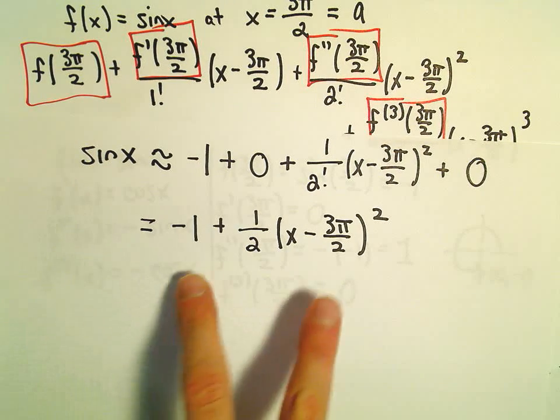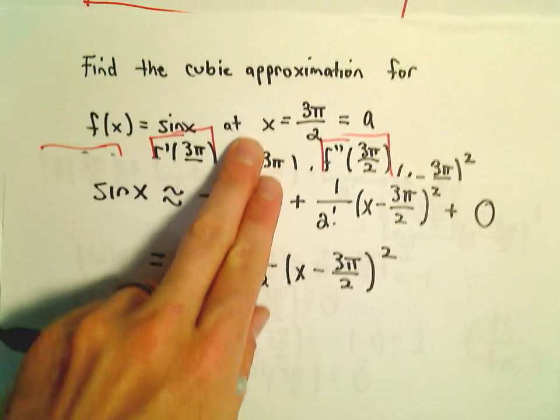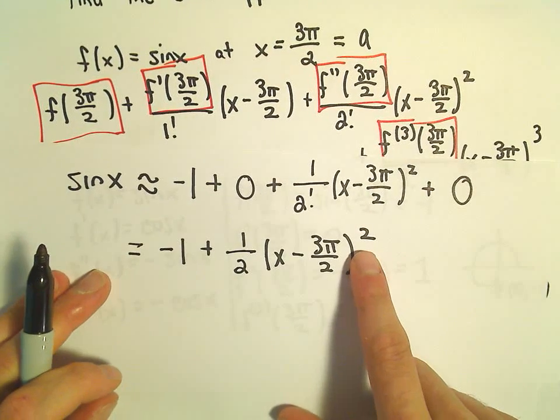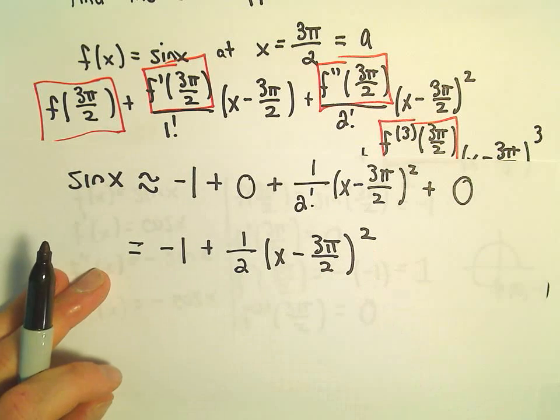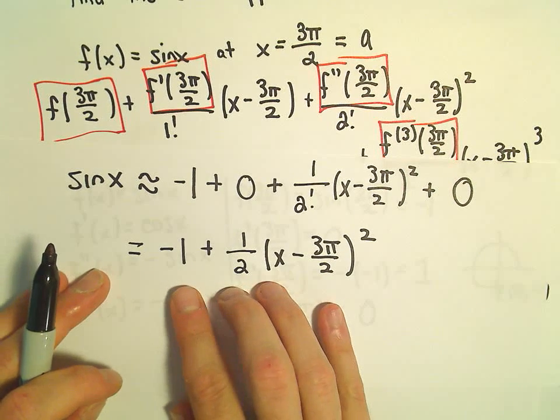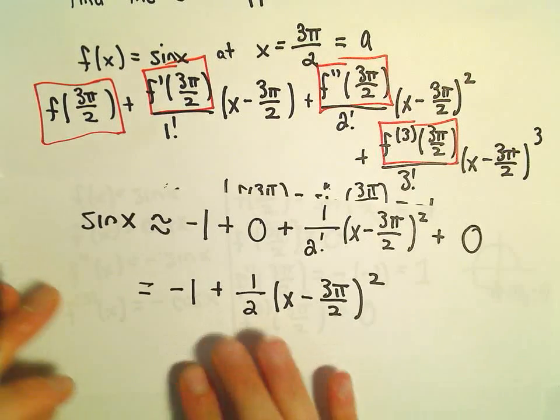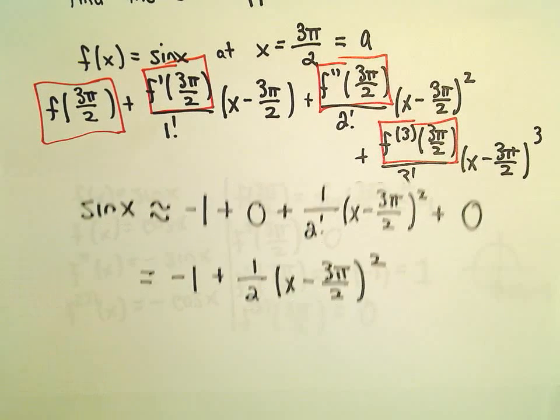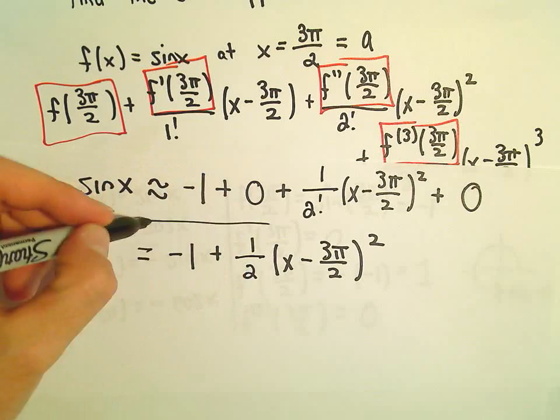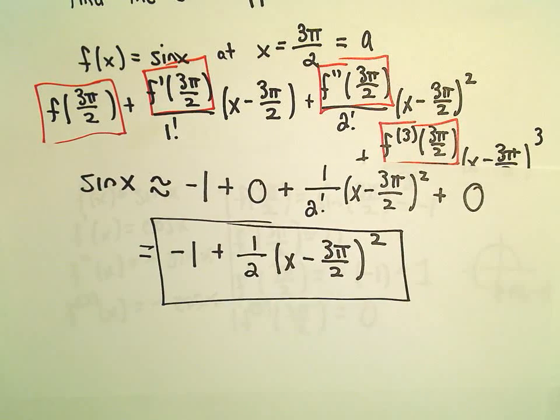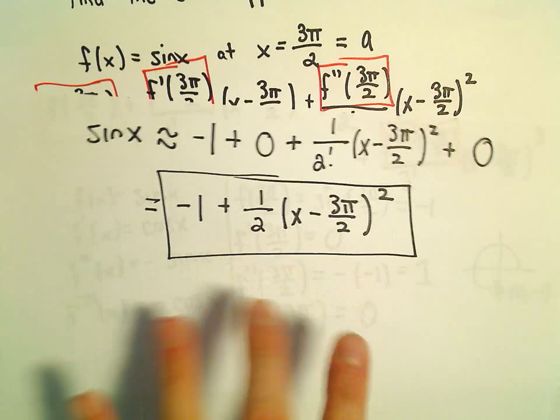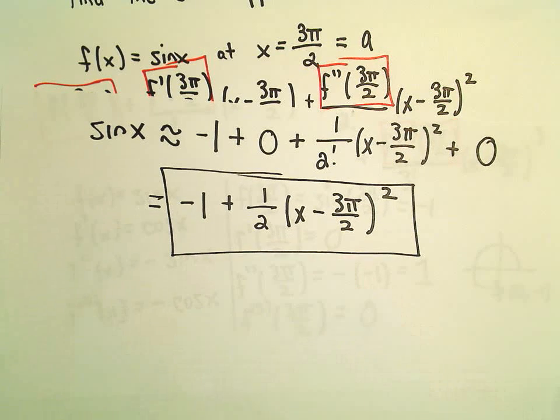And that would now be our cubic approximation. You may be looking at this and saying, well, that's not cubic, that's only squared. But this would also count as the cubic approximation because the third degree term is just 0. So that sometimes happens and that's okay. We would consider this our third degree approximation. We could also say it's the second degree approximation as well.